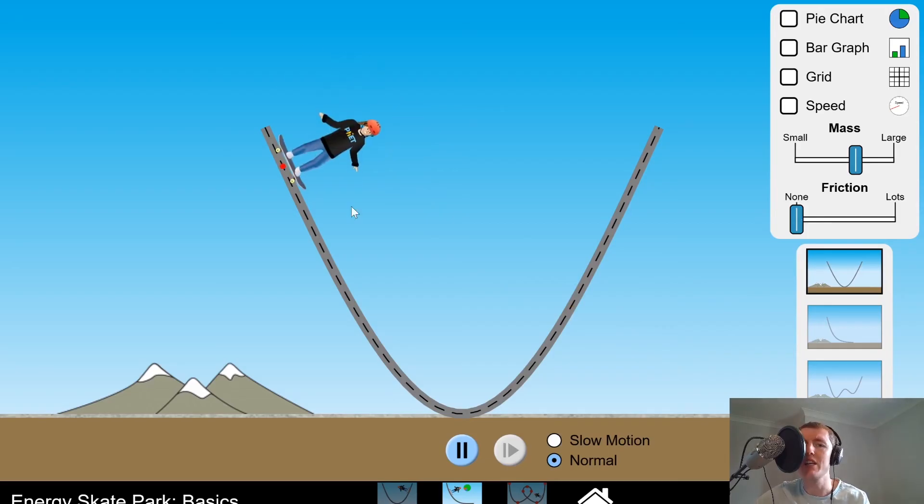So if I put the skater on the track here, what we should expect to see, because there's no friction and no air resistance, is that there's going to be no losses in energy. And this means that the skater will continue to move up to the same point each time. And that's because there is no friction between the tires of the skateboard and the track, causing them to slow down.